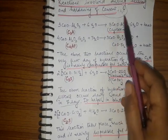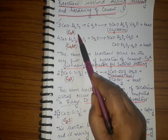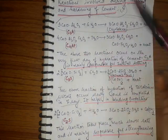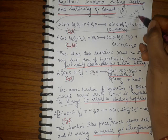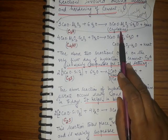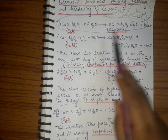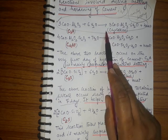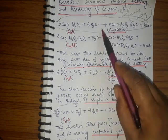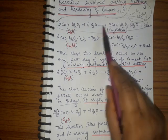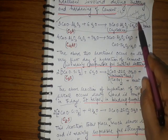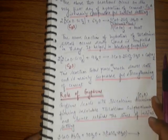When cement is mixed with water, all these reactions occur. However, the tricalcium aluminate (C3A) undergoes hydration very quickly and is mainly responsible for early setting of cement. If cement sets too early, cracks develop and decrease the strength of the cement. To retard or slow down this early setting, gypsum is added.